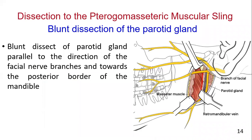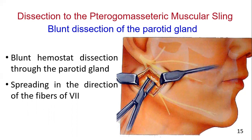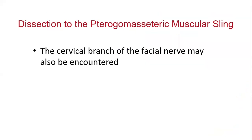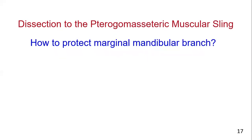Bluntly dissect the parotid gland parallel to the direction of the facial nerve branches and towards the posterior border of the mandible. The dissection should be anterior to the retromandibular vein. A hemostat is repeatedly inserted and spread open parallel to the anticipated direction of the facial nerve branches. In this figure, you can see blunt hemostat dissection through the parotid gland spreading in the direction of the fibers of the facial nerve. The cervical branch of the facial nerve may also be encountered but is of little consequence as it runs vertically out of the field. However, the marginal mandibular branch often interferes with exposure.